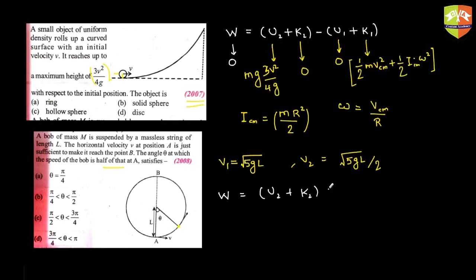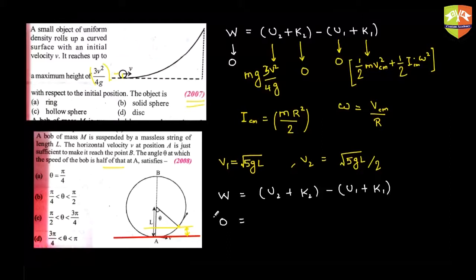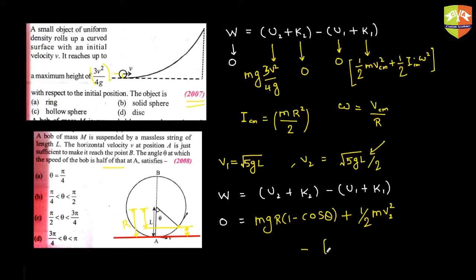W is zero. The red line represents zero gravitational potential energy. U2 equals mg times the height, which is r − r·cosθ (since r·cosθ is the vertical component and total distance from the reference is r), so U2 = mg·r·(1 − cosθ). K2 is (1/2)·m·v2², where v2 is the velocity at angle θ. U1 is zero. K1 is (1/2)·m·v1². Solving this gives you the value of cosθ.